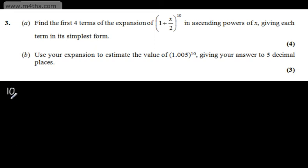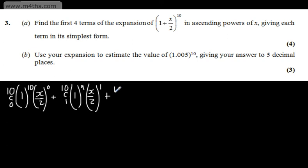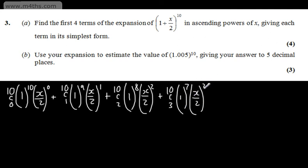So the first term will be 10C0, we'll have 1 to the power of 10, we'll have x/2 to the power of 0. Then we'll have 10C1, we'll have 1 to the power of 9, we'll have x/2 to the power of 1. Plus 10C2, we'll have 1 to the power of 8, we'll have x/2 to the power of 2. And then the fourth term we'll have 10C3, we'll have 1 to the power of 7 and we'll have x/2 to the power of 3.